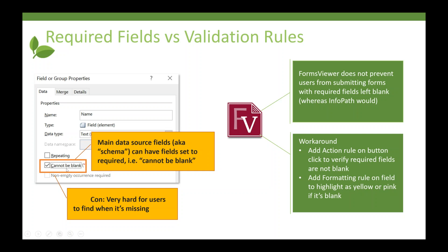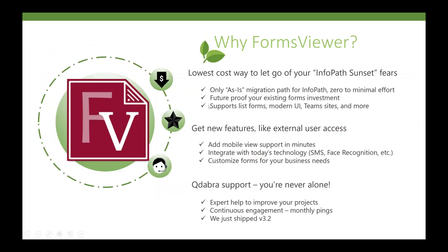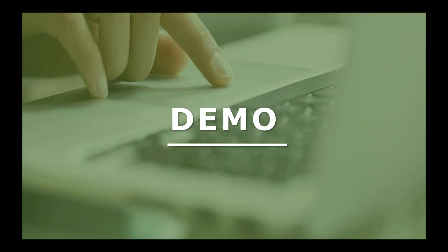If you want to prevent submission when a required field is blank, you will need to add an action rule, as we do with validation — you'll need to use a workaround. What we're shipping in 4.1 is support for validation rules, but not support for required fields. In some ways it's actually better — it's best practice to display the errors in the form rather than blocking submission, because if the form is really long, the user has a hard time finding where the error is. It's better to have the error message near where they're trying to submit.